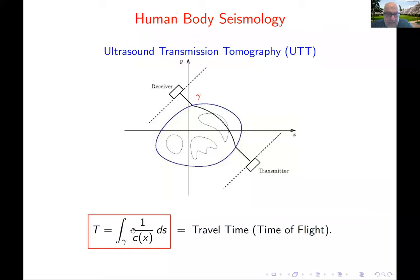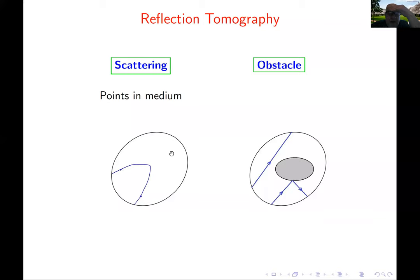The travel time in the isotropic case is the superposition of the infinitesimal travel times: 1/c, the sound speed, integrated over the curve gamma — that's the travel time. You move the receiver and transmitter around. There is also reflection tomography: when you have singularities in a medium, the waves reflect, as happens in oil exploration. We measure the travel time of the reflected rays.